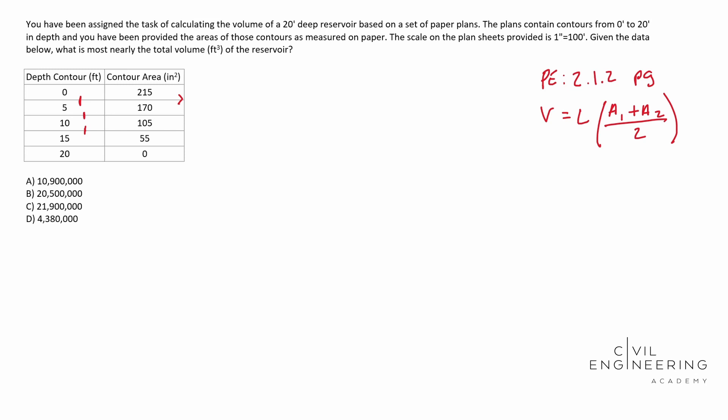So now we need to find the volume between contours zero and five, five and 10, 10 and 15, 15 and 20. And the way that we're going to do that is use that formula we just had. Well, when we do that from contour zero to five, you should end up with a formula that looks a little bit like this. We're going to have to go with five foot in length times our areas. Well, our areas are in inches squared. So we need to multiply that by our scale squared. Okay. So we're going to have area one, 215 inches squared plus area two, which is 170 inches squared. We need to multiply that by our scale. Basically we have 100 foot per every one inch. And so now our inches are going to cancel out. If we square that guy, notice that. And then we need to divide that by two.